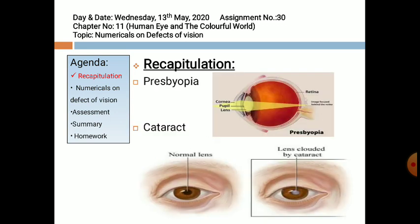The next defect is presbyopia. In presbyopia, the ciliary muscles of a person become weak and lose flexibility. The power of accommodation of the eye decreases, and hence the person is unable to see nearby objects and far objects clearly. This defect is also known as old age hypermetropia. It is corrected with spectacles fitted with bifocal lenses — a concave lens for distant objects and a convex lens for nearby objects.